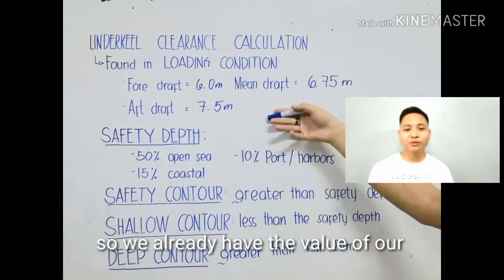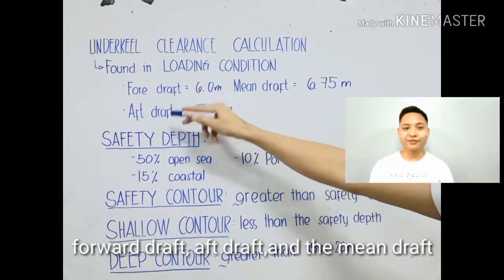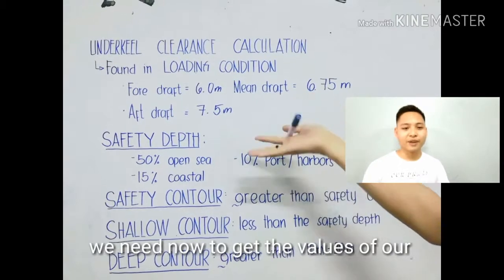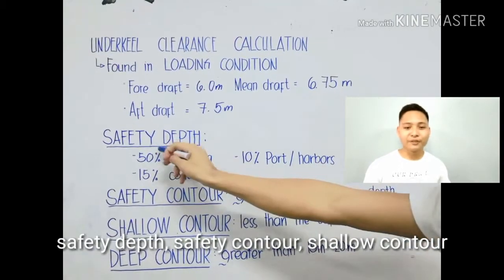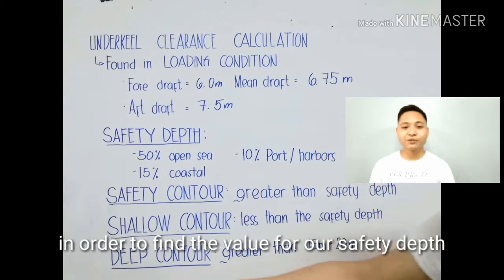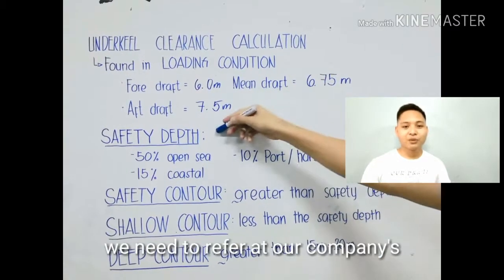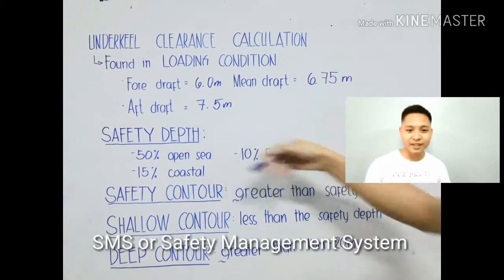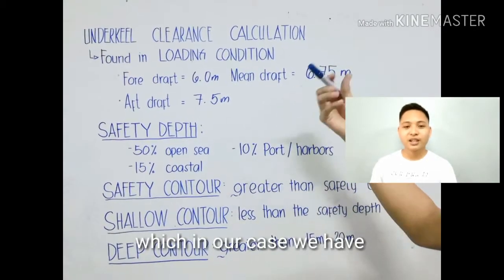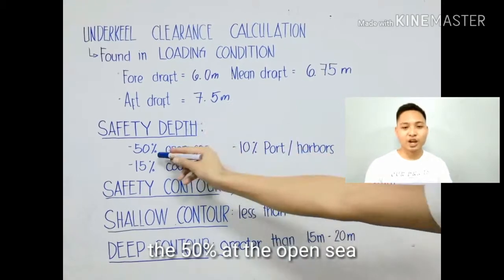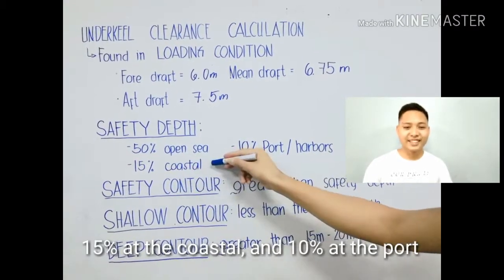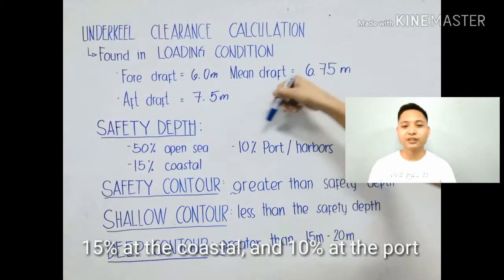Now that we have our forward draft, aft draft, and mean draft, we need to get the values of our safety depth, safety contour, shallow contour, and deep contour. In order to find the value of our safety depth, we need to refer to our company's SMS, or Safety Management System. In our case, we have 50% at the open sea, 15% at the coastal, and 10% at the port or harbors.